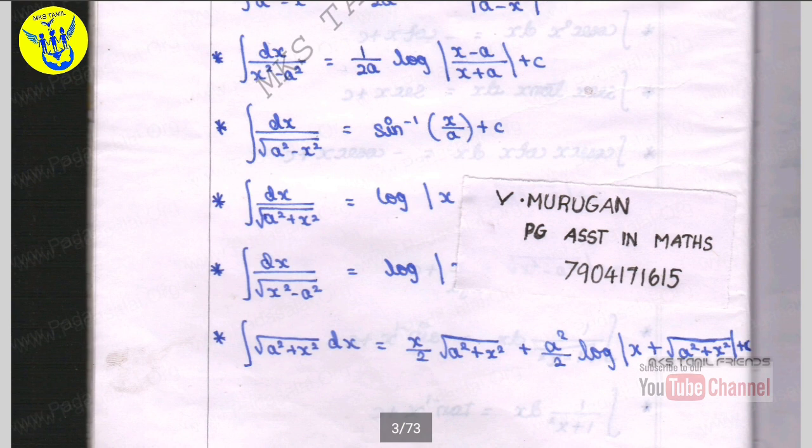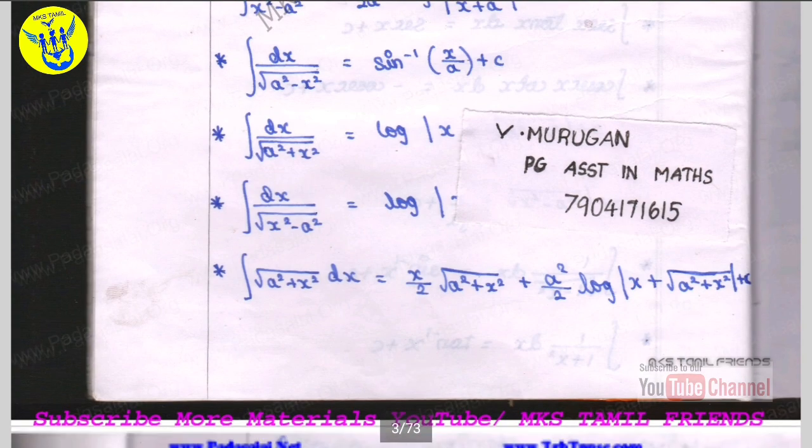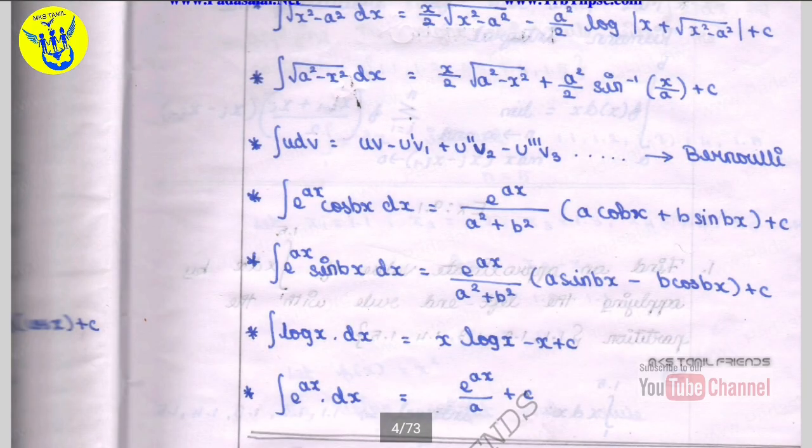Integral root of a square plus x square dx is equal to x by 2 times root of a square plus x square plus a square by 2 log modulus x plus root of a square plus x square modulus plus c. Integral root of x square minus a square dx is equal to x by 2 root of x square minus a square minus a square by 2 log modulus x plus root of x square minus a square modulus plus c. Integral root of a square minus x square dx is equal to x by 2 root of a square minus x square plus a square by 2 sin inverse x by a plus c.